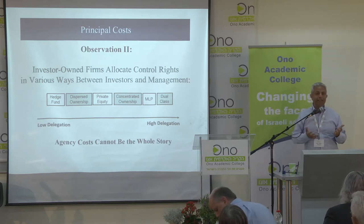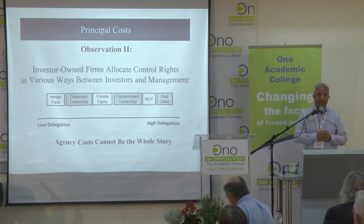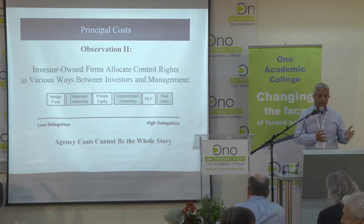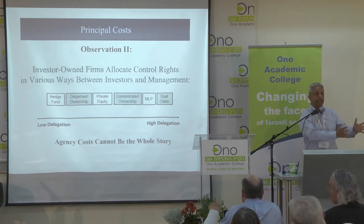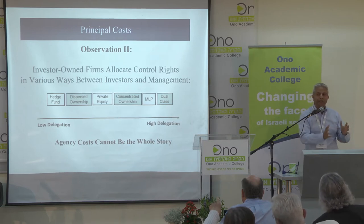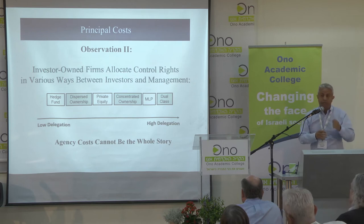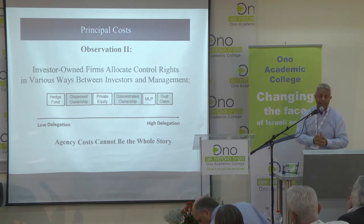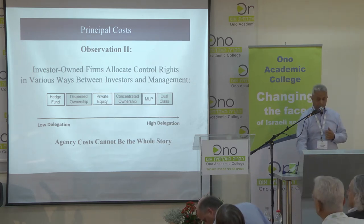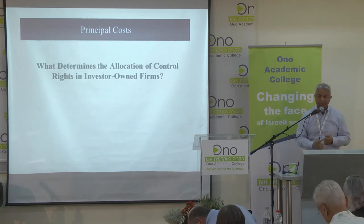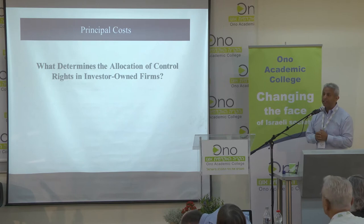If agency costs were the issue, we would see most companies focusing more toward direct democracy. If this is not the problem, then we would see most corporations adopting dual class. So it must be something that is countering the effect of the agency costs problem. This is the project: what determines the allocation of control rights in investor-owned firms?